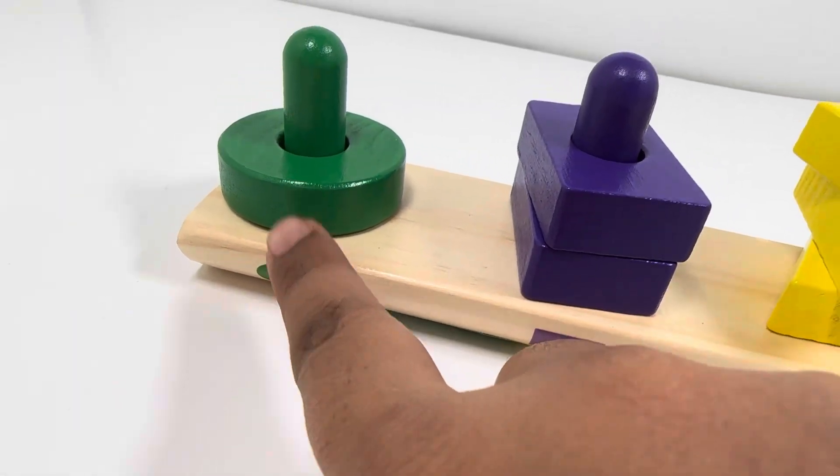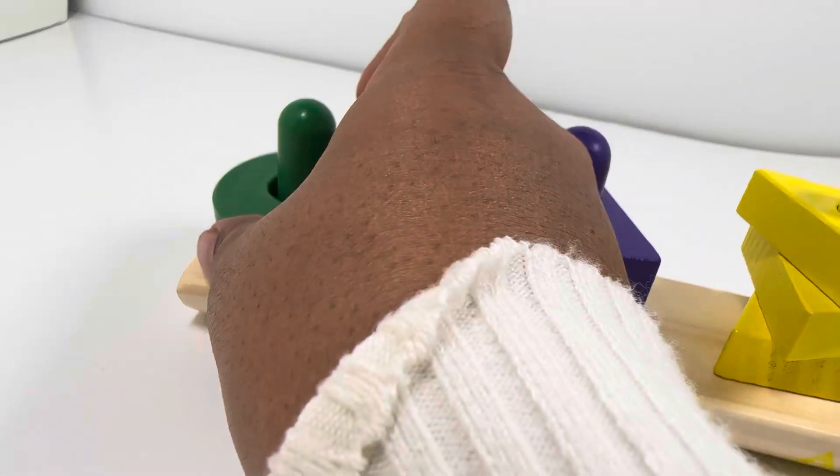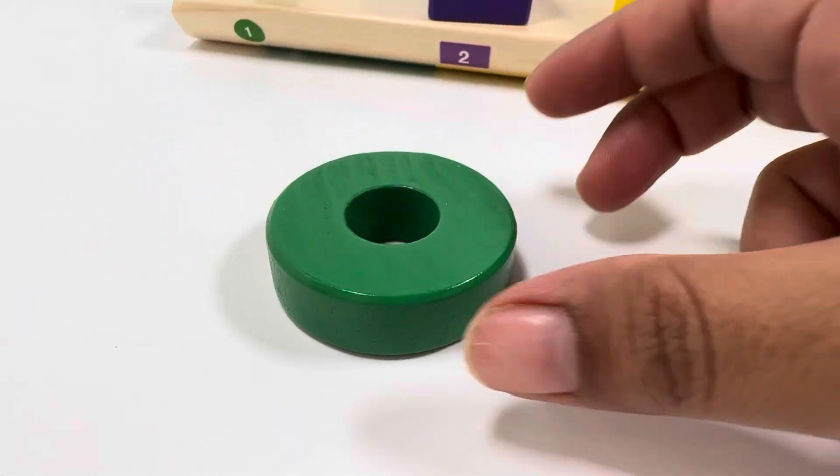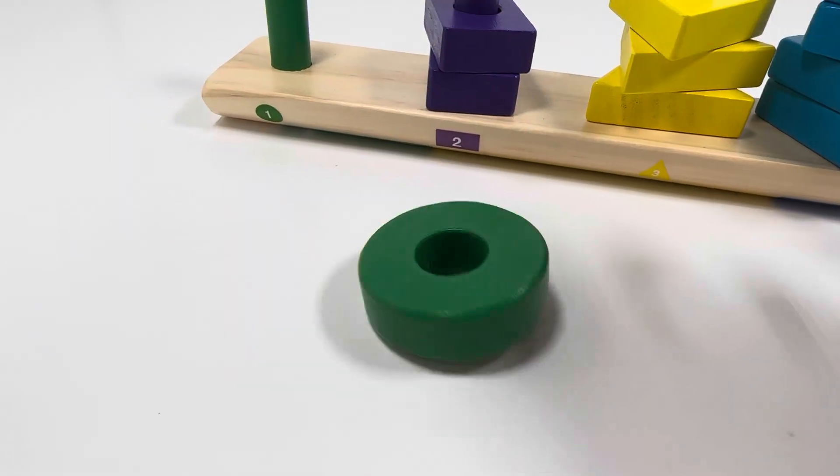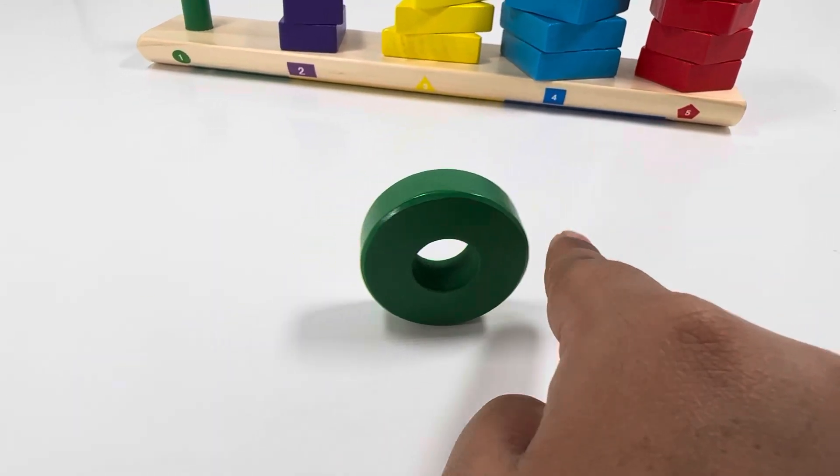The first shape is green color and it is a circle. A circle is round and has no sides. Look, it's like a wheel since it's rolling.